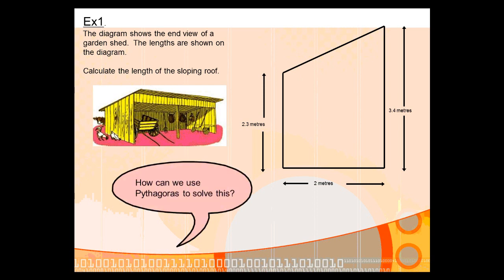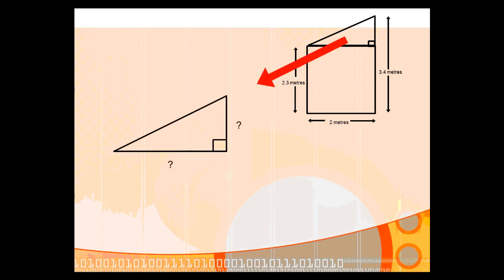Now, how can we use Pythagoras to solve this? What you need to do is add a line. And if we add a line horizontally across like that, that is going to form a right-angled triangle that we can then do something with. Taking that right-angled triangle at the top of the rectangle and isolating it on its own, what we need to do next is identify what we know. The base is going to be the same as the base of the rectangle, and the height is just going to be the difference between the back height and the front height. So we can say that the base is 2 metres and that the height is 1.1 metres.